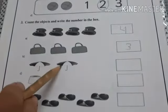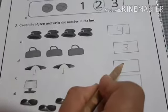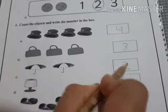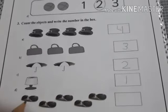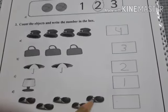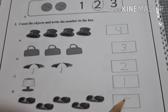1, 2, 2 umbrellas. 1 lamp. 5 sunglasses. So we will write number 5 here.